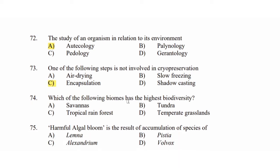Question 74: Which of the following biomes has the highest biodiversity? The answer is Option B/C: tropical rainforest, which has the highest biodiversity.